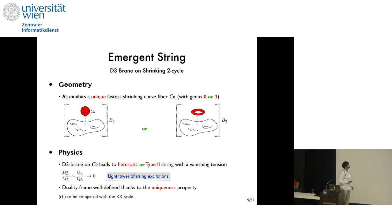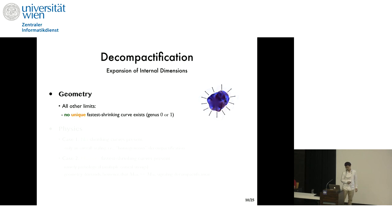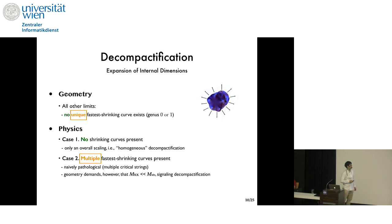In all other limits, no unique fastly shrinking curve exists by definition. Firstly, if no shrinking curves are present at all in the geometry, only an overall scaling would be in play, which means that we have a homogeneous decompactification. Secondly, multiple shrinking curves may be present or shrinking at the same parametric rate. And naively, this would be a pathology because multiple critical strings would arise this way. However, if you carefully analyze the geometry of the expanding cycles, you realize that the KK scale, in this case, always wins against the string scale signaling decompactification. And therefore, in both cases, we have light tower of KK modes.